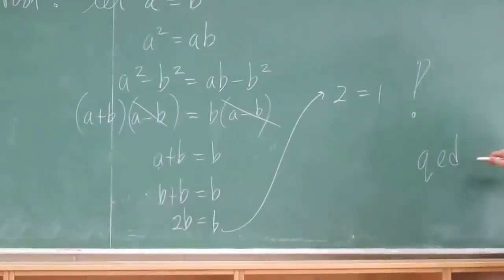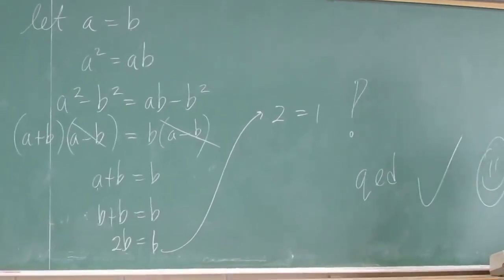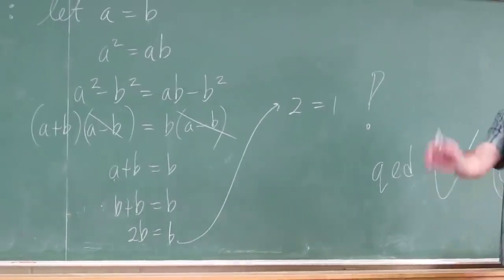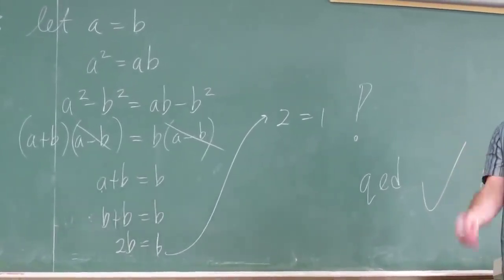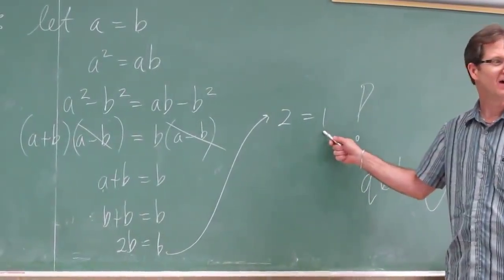QED. Make that check mark. Awesome. Whoa, what's wrong here? What? 2 equals 1. Oh, she'll be quiet. She knows. I'll get them to give us the answer in a minute. What's wrong here? If there's nothing wrong, this must be true.